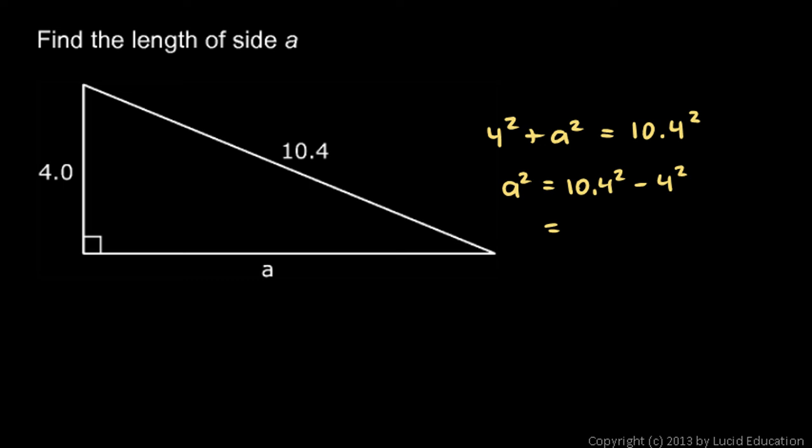10.4 squared is 108.16, and 4 squared is 16. And so I subtract: 108.16 minus 16 is 92.16. That's a squared. We just found a squared, so a is going to be the square root of 92.16, and that comes out to 9.6.